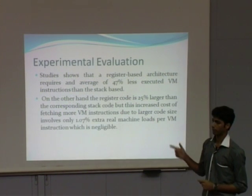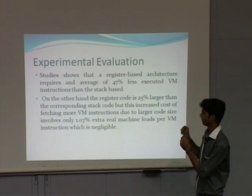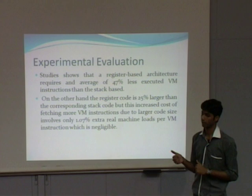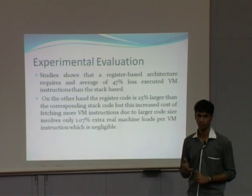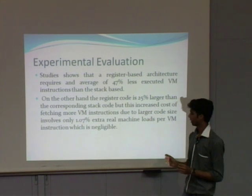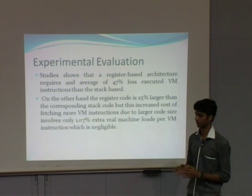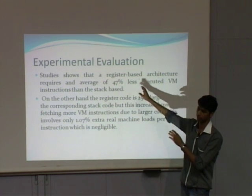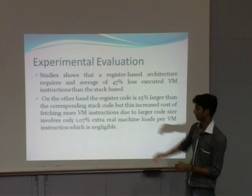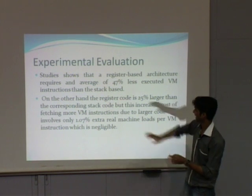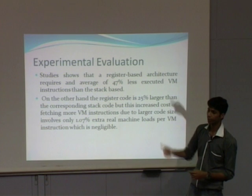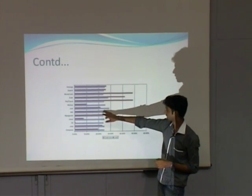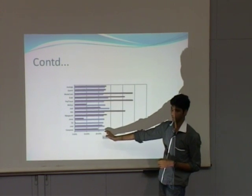The experimental evaluation shows that when using register-based architecture, the overall decrease in the number of instructions is 47 percent — meaning we execute 47 percent fewer instructions compared to stack-based architecture. But the overall size of each instruction is 25 percent larger for register-based architecture. When we compare these two trade-offs, executing 47 percent fewer instructions is much better than accepting the 25 percent increase in instruction size. So using register-based architecture is clearly better, and the graph also shows that the code size values are all approximately 25 percent larger.